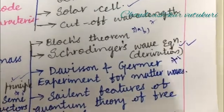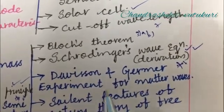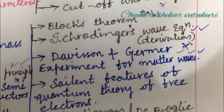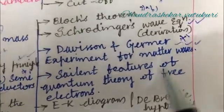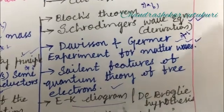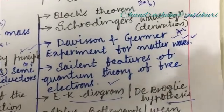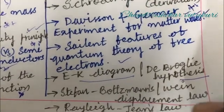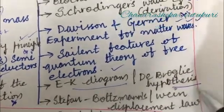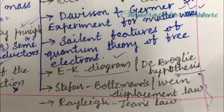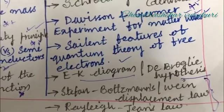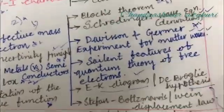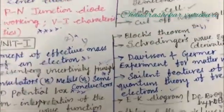Later, the third question is all about Bloch's theorem. Schrodinger wave equation and the derivation is set to be that gun shot question. Davisson and Germer experiment for matter waves is also a repeated and topmost question. Salient features of the quantum theory of free electrons, E-K diagram may be a short question. De Broglie hypothesis is also an important question. Stefan-Boltzmann as well as Wien's displacement law and Rayleigh-Jeans law—from these three laws you may be getting differences or short as well as long questions, dear students. These are set to be the very important questions.